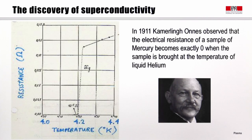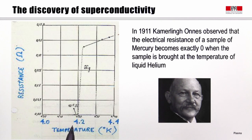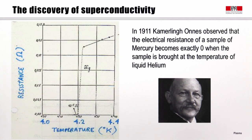Superconductivity was discovered in 1911 by Kamerlingh Onnes, who observed that the electrical resistance of a sample of mercury became not just small, but exactly zero when the sample was brought to the temperature of liquid helium. This is the original plot that he produced. You can see that below 4.2 degrees Kelvin, the resistance is identically equal to zero. So that opened the field of superconductivity.